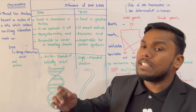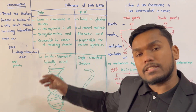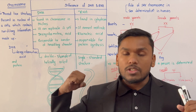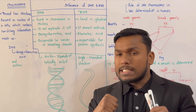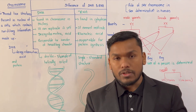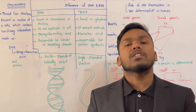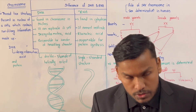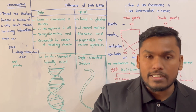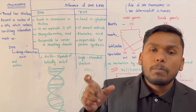DNA is responsible for the hereditary character. RNA is involved in protein synthesis — the production of protein in living organisms. DNA carries the hereditary character while RNA handles protein synthesis.